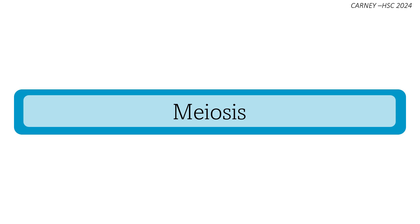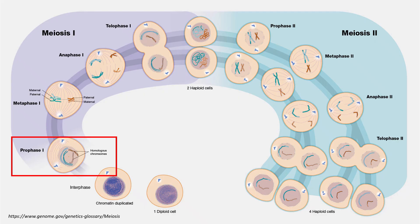Meiosis is a type of cell replication involved in the development of reproductive cells. Cell division results in four non-identical daughter cells, referred to as haploid, meaning half the number of complete sets of chromosomes, N. Meiosis has some similarities to mitosis; however, there are a few key differences. In meiosis, there are two stages: meiosis I and meiosis II.